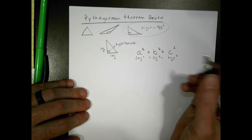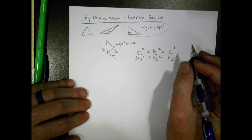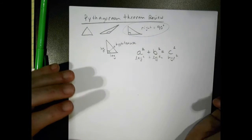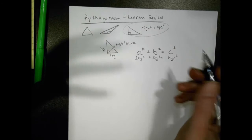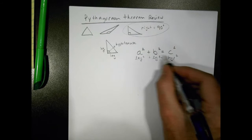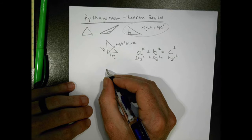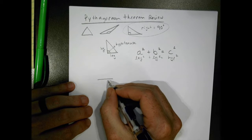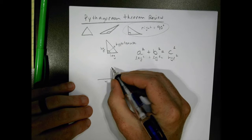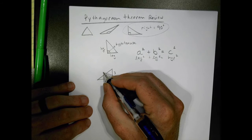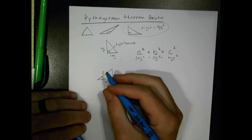We can find what's called the converse of that as well. We can see if something is a right triangle by seeing if this relationship works out. Sometimes they give you numbers and ask, is this a right triangle? Let's say I had a triangle that had a leg of four and another leg of three, and then a hypotenuse of five. Sometimes you can look this up and see pictures like this.